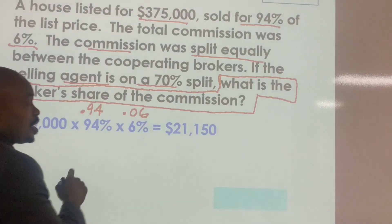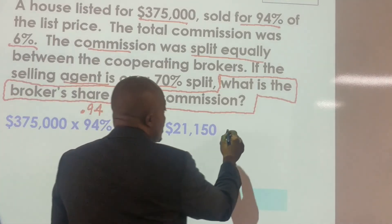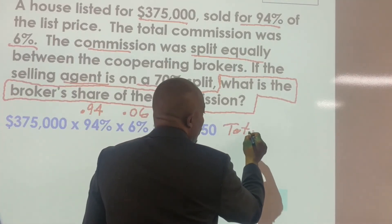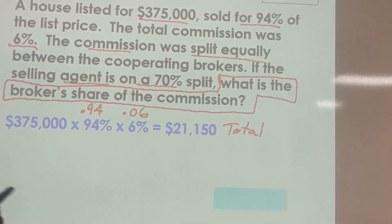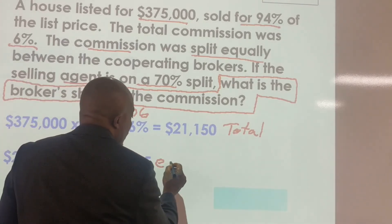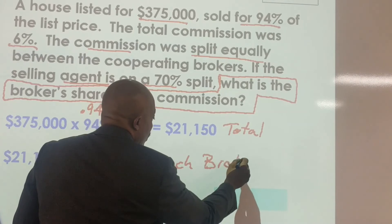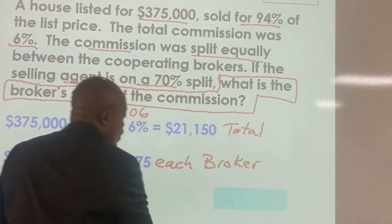This gives us the total commission. The total commission is $21,150. We know that commission was split between two brokerages, so $21,150 divided by two — each side gets $10,575. That is each broker's share before the agent split.